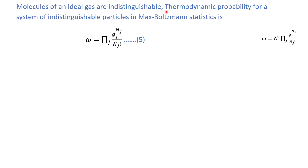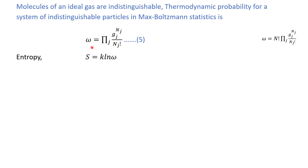In the beginning of this statistical mechanics course we discussed that all equilibrium thermodynamic properties can be expressed in terms of the statistical distribution function. We know that molecules of an ideal gas are indistinguishable, and the thermodynamic probability for a system of indistinguishable particles in Maxwell-Boltzmann statistics is given by equation number five. We calculated the thermodynamic probability for indistinguishable particles, and for the ideal gas we divide the equation by N factorial to get equation number five.